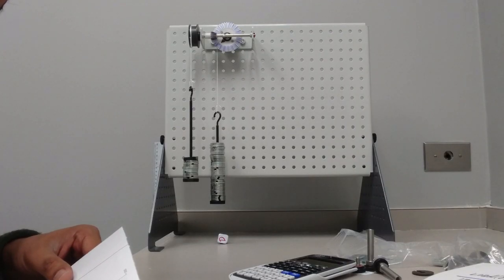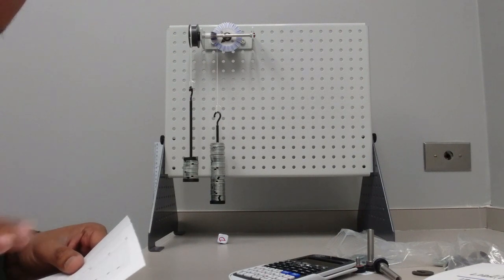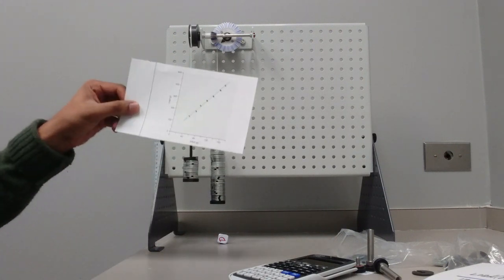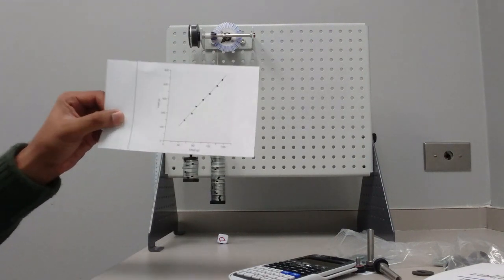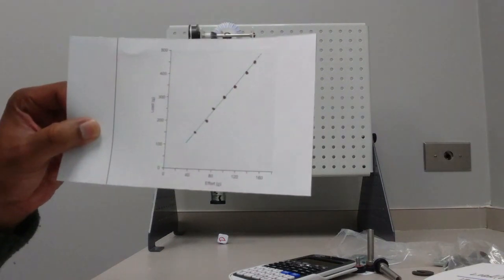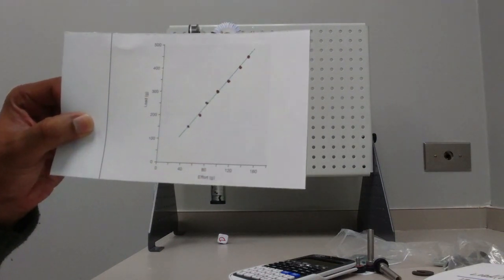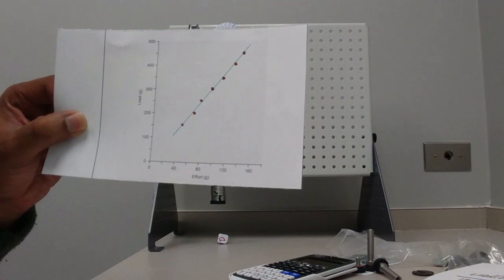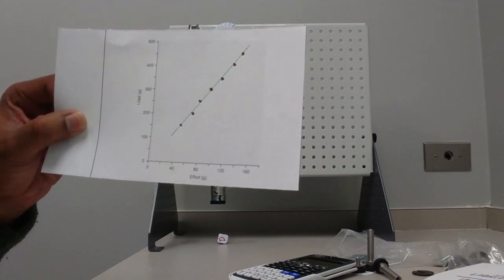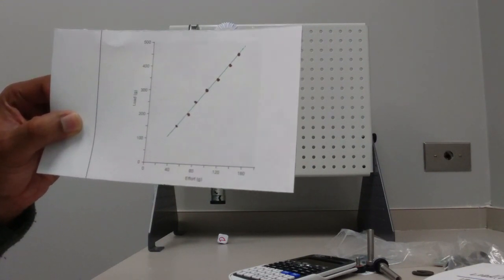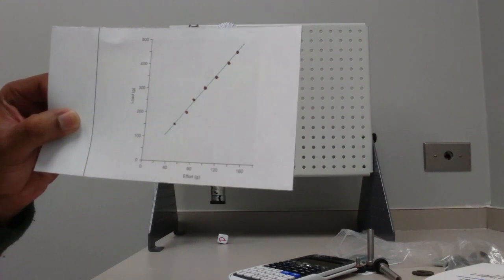So we have plotted our data into a graph. This is our first graph, which is load versus effort. And we see that the chart on load versus effort is almost a linear straight line, a proportional relationship.